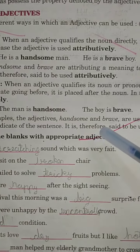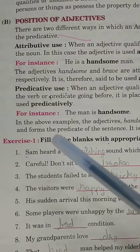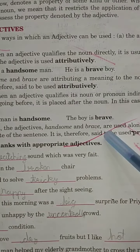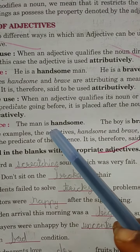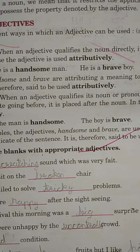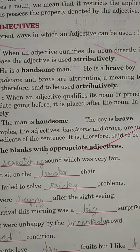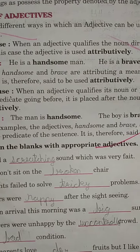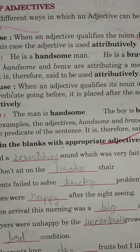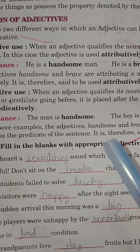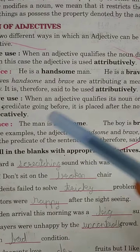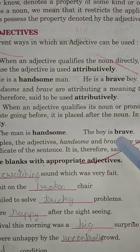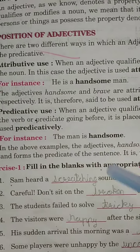In the above examples, adjectives 'handsome' and 'brave' are used along with the verb and form the predicate of the sentence. It is therefore said to be used predicatively. Like, 'that girl was very brave' — 'was' verb ke saath 'brave' adjective laga, toh yeh predictively use hua. Handsome aur brave, verb ke saath use hote hain — jaise 'is handsome', 'is brave' — aur isiko hum predictively ya indirectly bhi bolte hain.